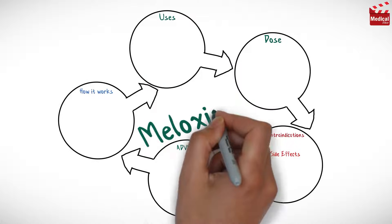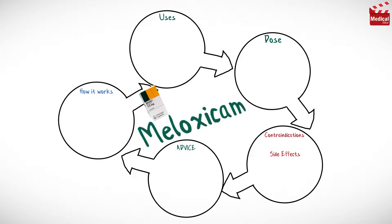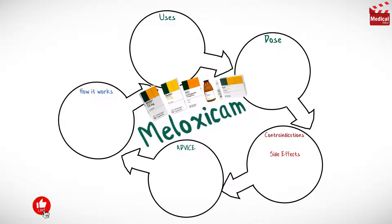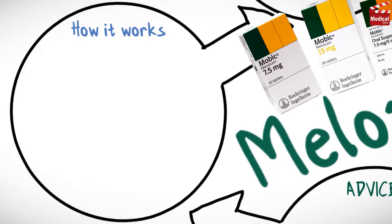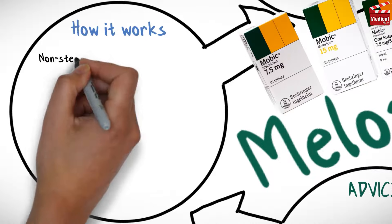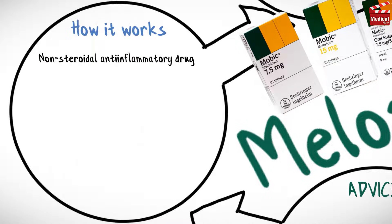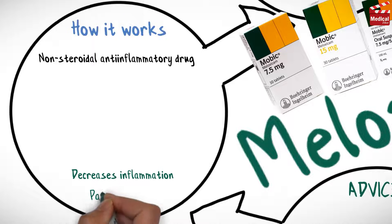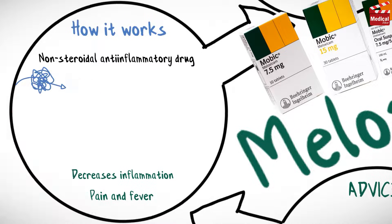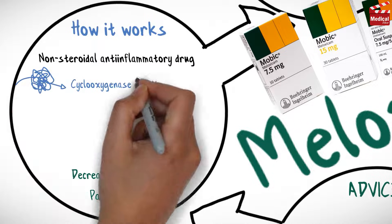In this video we'll briefly discuss what is meloxicam, how it works, what it's used for, the dose, side effects, contraindications, and precautions. Meloxicam is a non-steroidal anti-inflammatory drug. It decreases inflammation, pain, and fever through inhibition of cyclooxygenase activity and prostaglandin synthesis.